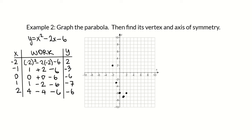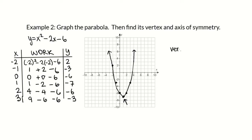We can see just from these points what the vertex is because it's the turning point. I'm going to plug in one more point — x equals 3: 3 squared is 9, minus 2 times 3 is negative 6, minus 6 gives negative 3. So the point (3, negative 3) is on the graph. Drawing our graph, the vertex is the turning point, which is the point (1, negative 7).